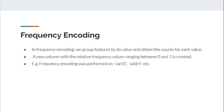The last feature engineering technique is frequency encoding. We group features by their value and obtain counts for each value, then create a new column with relative frequency values ranging between 0 and 1. Examples of columns where frequency encoding is applied include card1 and address1.